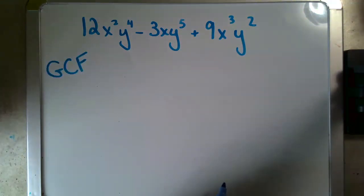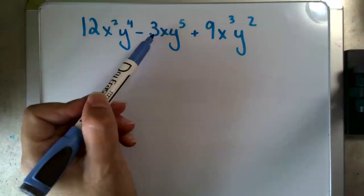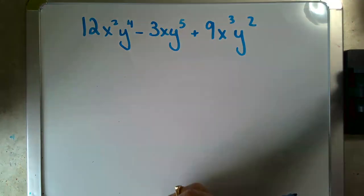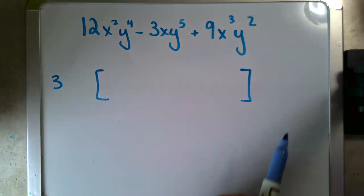So my next step will be to factor out the greatest common factor. That means something that is multiplied into each term. So if I start with my numbers, I have a 12, a negative three, and a nine. And I see that each one of those contains a three as a factor. So I'm going to start by pulling out that three and I'm going to leave room here for what's going to be left.